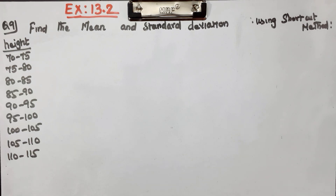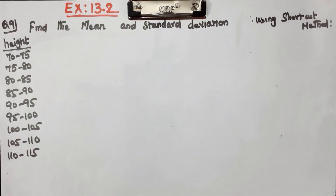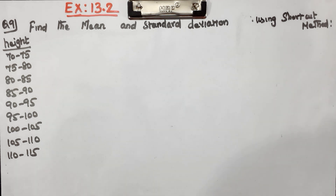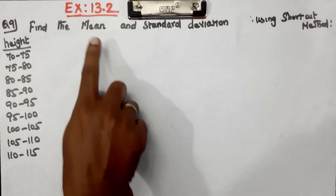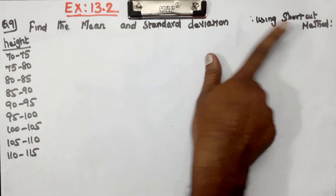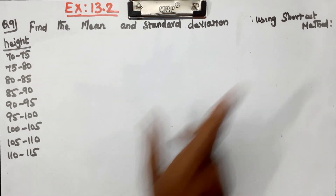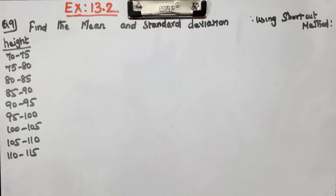Hello students! In this video, we will talk about exercise 13.2, question number 9. Let's talk about some important questions. Find the mean and standard deviation using the shortcut method.